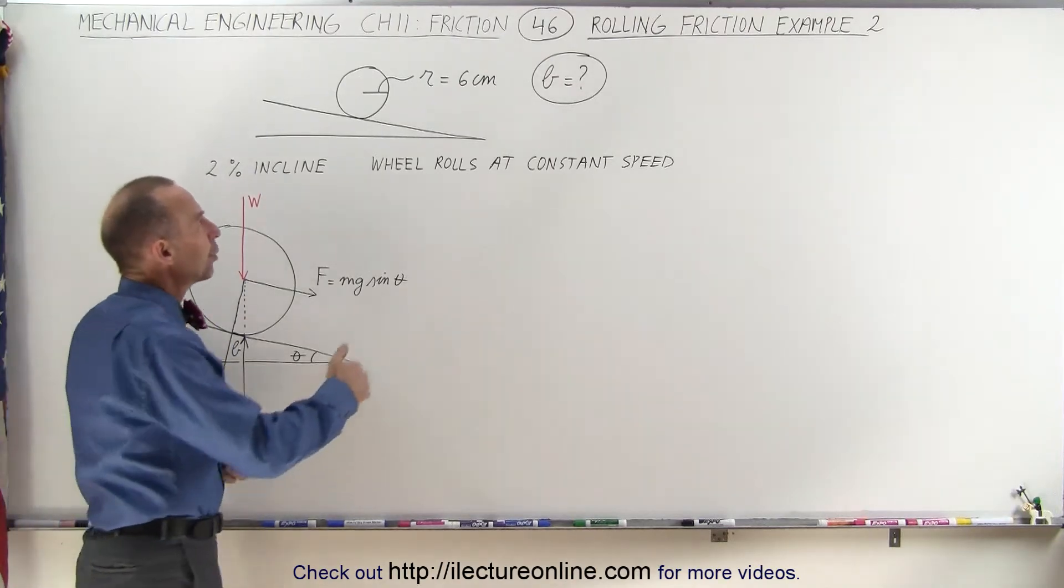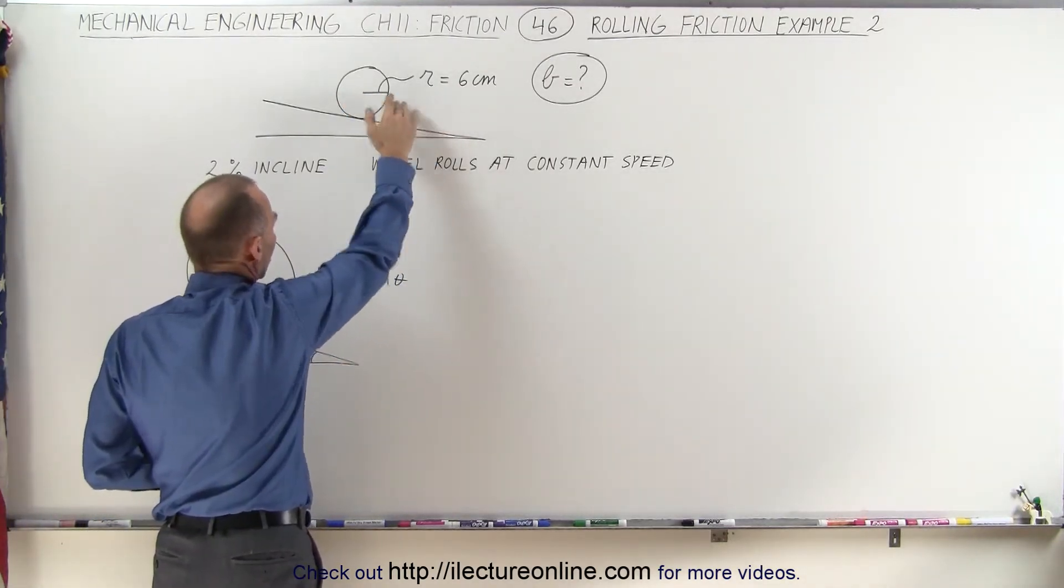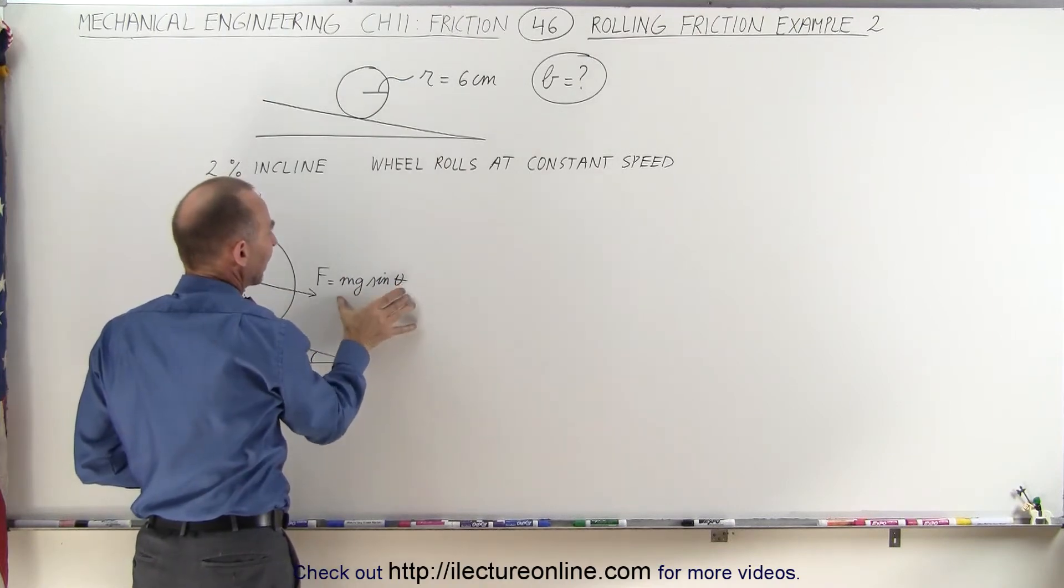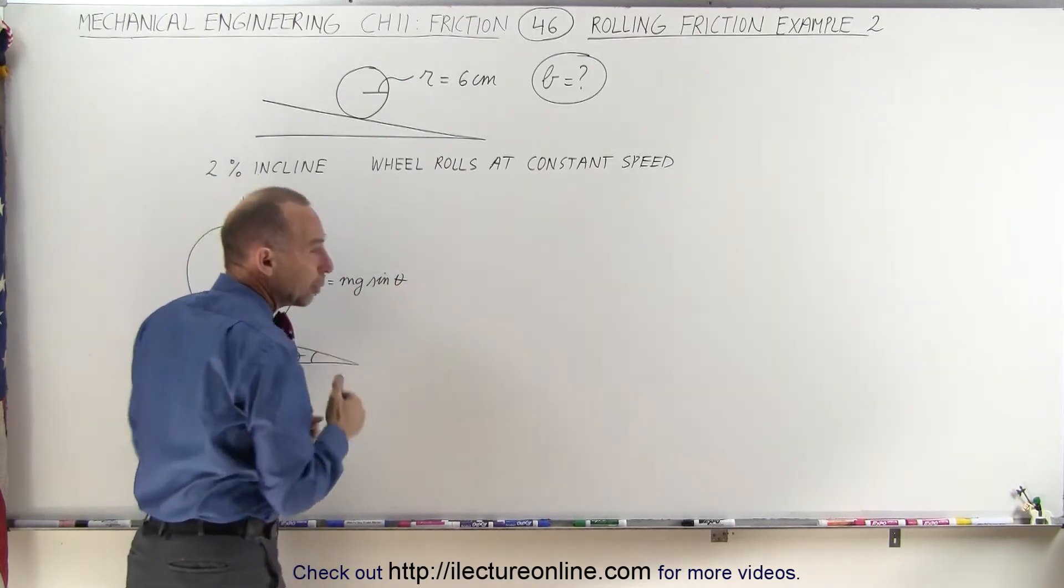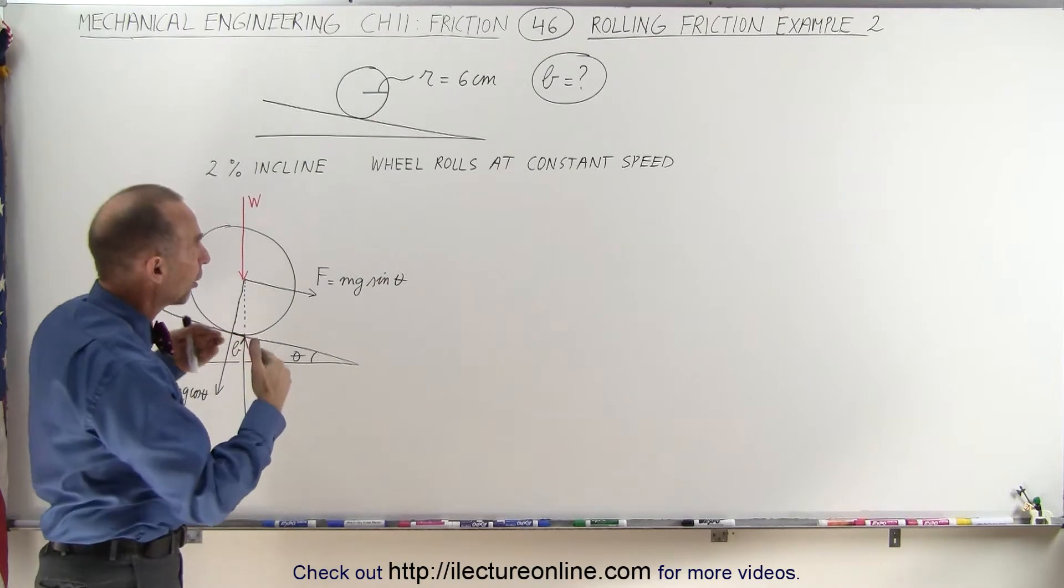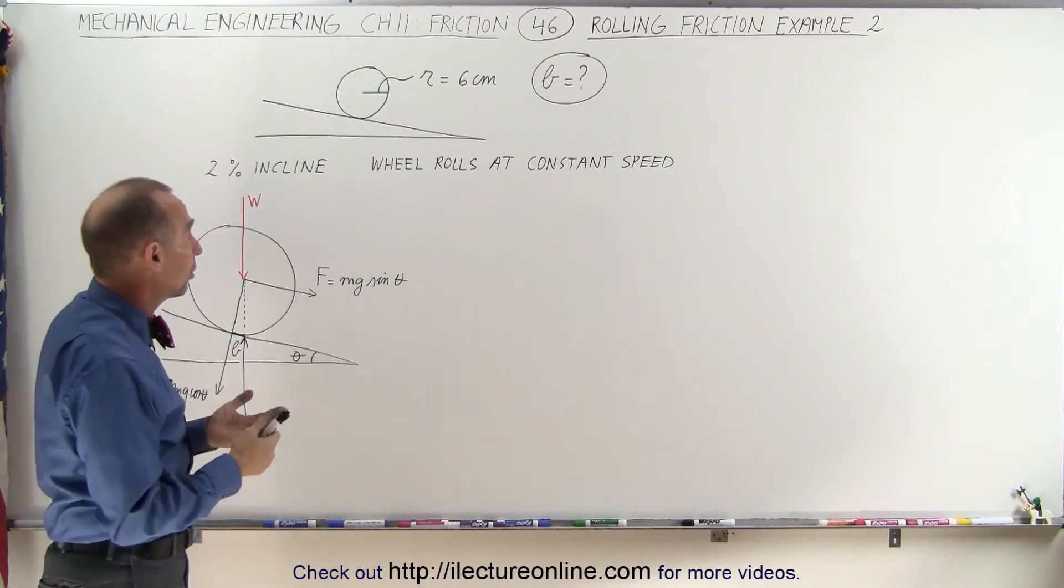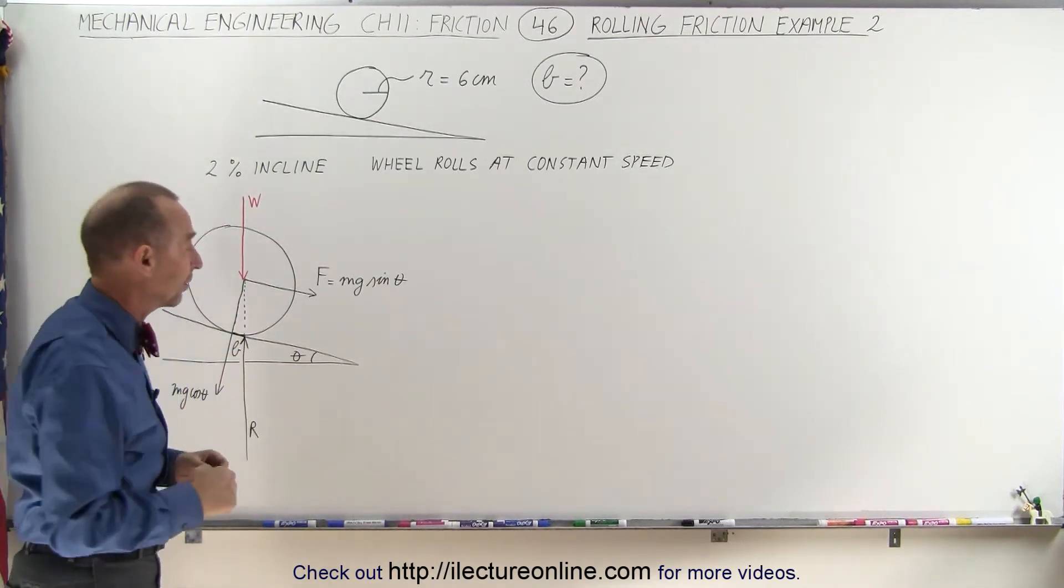Which means that the component which is parallel to the incline of the weight, which is called the mg sine theta component, must be equal to the friction force, otherwise the wheel would start to accelerate or decelerate if the two forces were not the same.